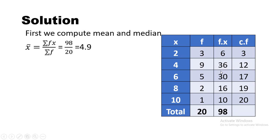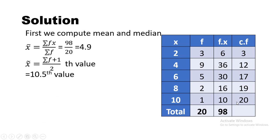For the median, the formula is the (ΣF + 1)/2 th value. Using this formula: (20 + 1)/2 = 10.5. We look for the 10.5 position in the cumulative frequency (CF) column. The value 10.5 lies in the class corresponding to observation 4, so the median value is 4.